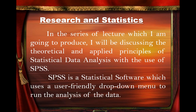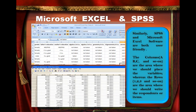I am also going to produce a lecture before applying the step-by-step procedure. SPSS is a statistical software which uses a user-friendly drop-down menu to run the analysis of the data. This is Microsoft Excel and this is the SPSS — see how they are different. Similarly, SPSS and Microsoft Excel software are both user-friendly. The columns such as A, B, C and so on are the area where we should place the variables.